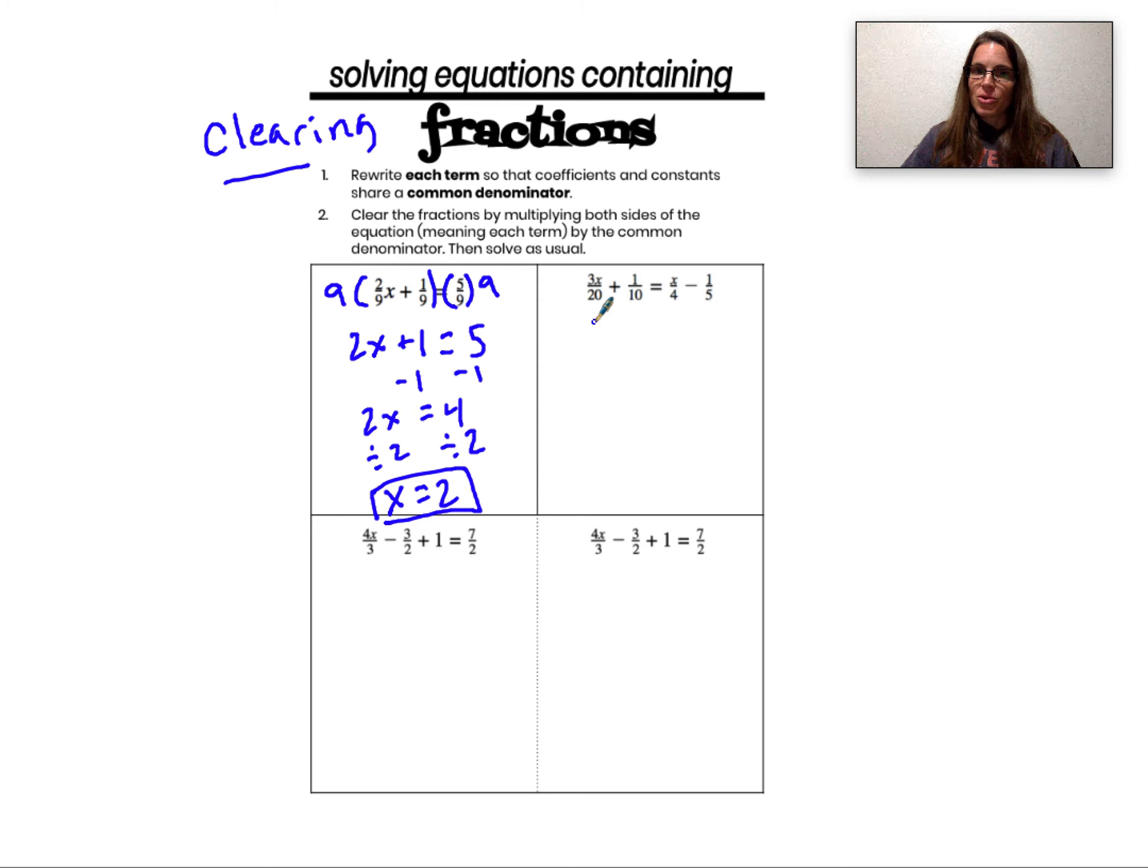The common denominator I'm going to use here is going to be 20. So I can rewrite each term in this equation with a denominator of 20. 3x over 20 is already ready to go.